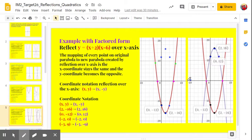Now I have the two pink points there. The zeros are the same because the zeros are on the x-axis, so there's nowhere to go when they reflect. They stay on the x-axis.